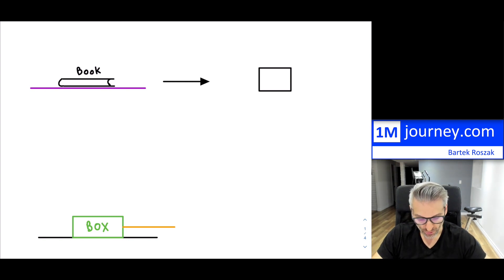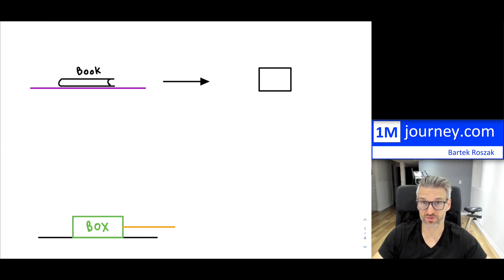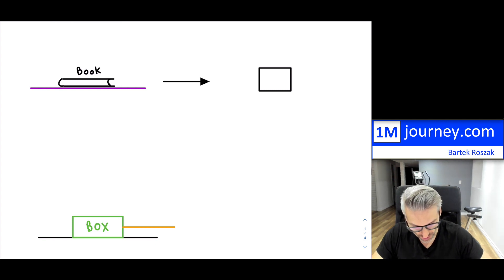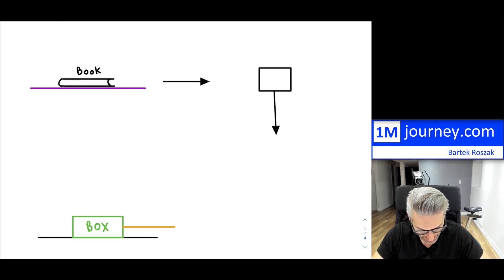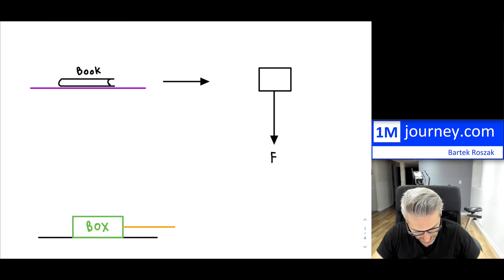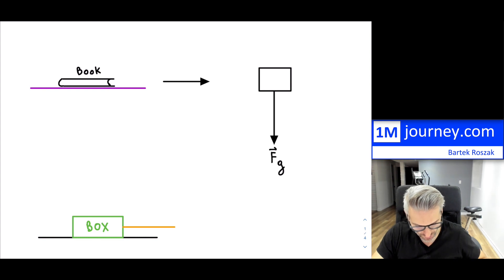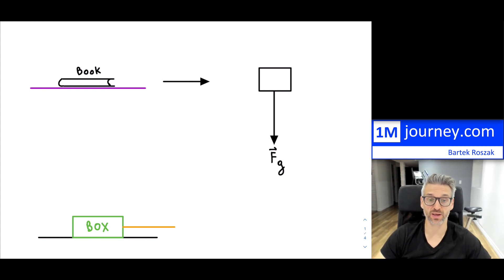First of all, whenever you have an object, gravity will be acting on it. It's pretty much impossible not to have it, especially near the Earth's surface. So gravity always pulls the object down. In our free body diagram, we draw the force of gravity pulling downward. You can label it as F-sub-g for gravity, or sometimes people put W, which means weight.